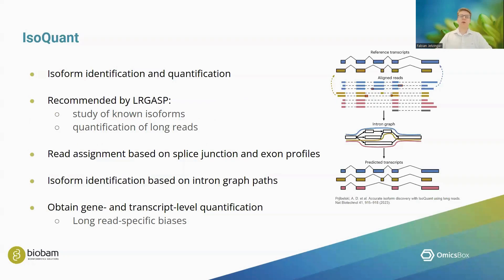First, let's talk about IsoQuant, which is a computational tool for the identification and quantification of isoforms. We could have already used this tool for the original definition of our transcriptome. However, we chose to use FLARE instead, a decision mainly based on results of the LongGrasp comprehensive benchmarking efforts recently published in Nature Methods. IsoQuant was recommended for studying known isoforms and quantification, while FLARE was recommended for discovering novel isoforms.